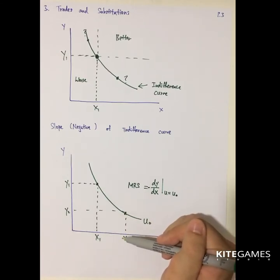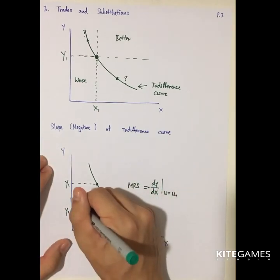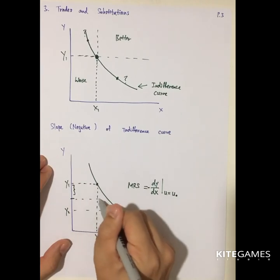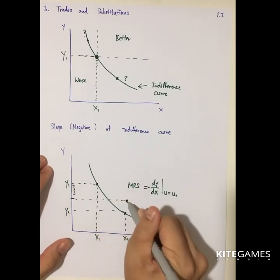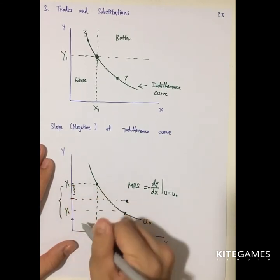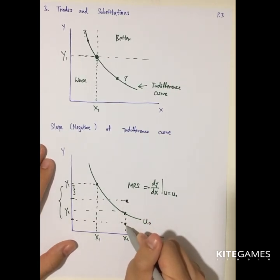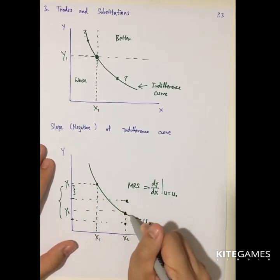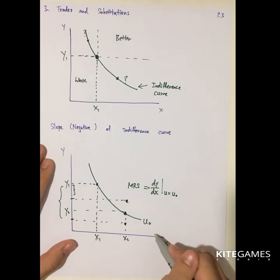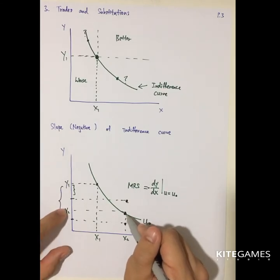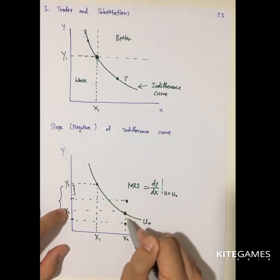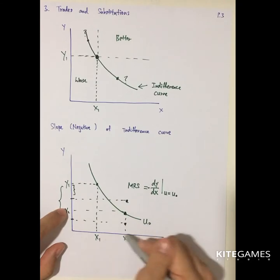MRS, marginal rate of substitution, is the maximum amount of Y you are willing to give up in exchange for one more unit of X. If you give up less Y, a higher utility can be attained. If you have to give up more Y, you attain a lower utility level. Only the exact amount of Y corresponding to the MRS allows you to stay on the same indifference curve — meaning you won't lose anything. So MRS is the maximum you are willing to pay if you want to buy one more unit of X.